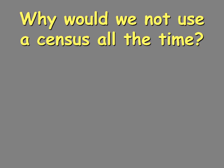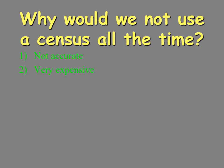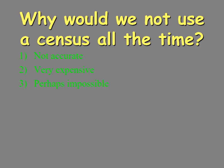Why would we not want to use a census all the time? It's not very accurate — there is a lot of error in a census, and we'll talk about bias and different types of errors as we go through this lesson. It takes a long time and it's almost impossible to get every individual. Doing a census is very expensive; you have to gather information from the entire population and hire people to do that work.